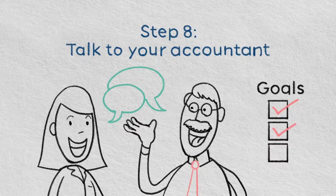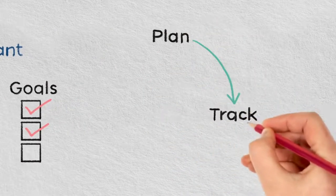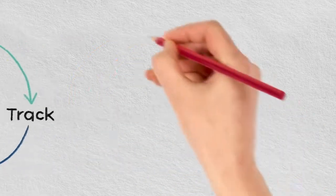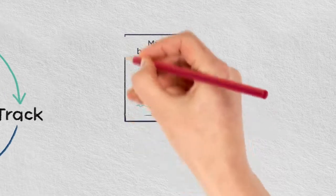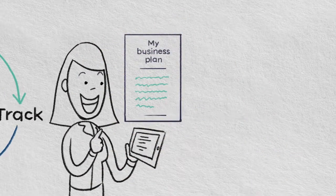Good business planning is a three-stage process. You plan for the future, you track your progress and you learn from your experience. One of the most important things to remember is that a business plan is a living document. Just as your business evolves over time,